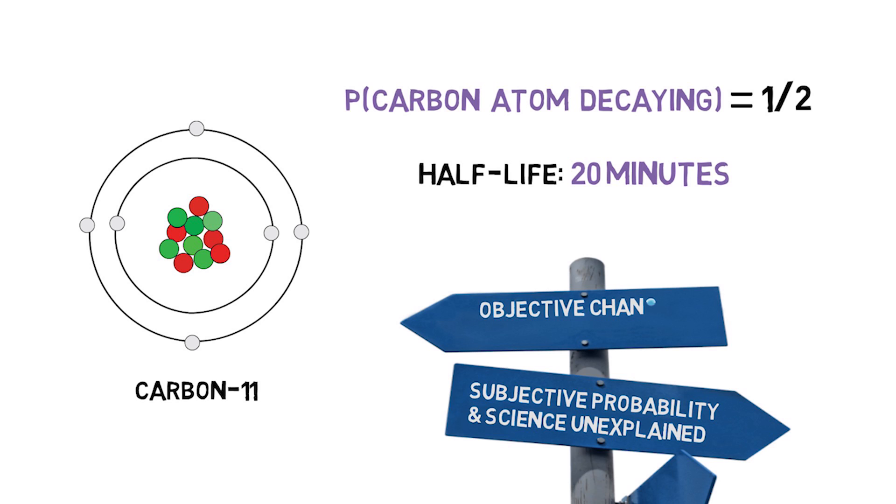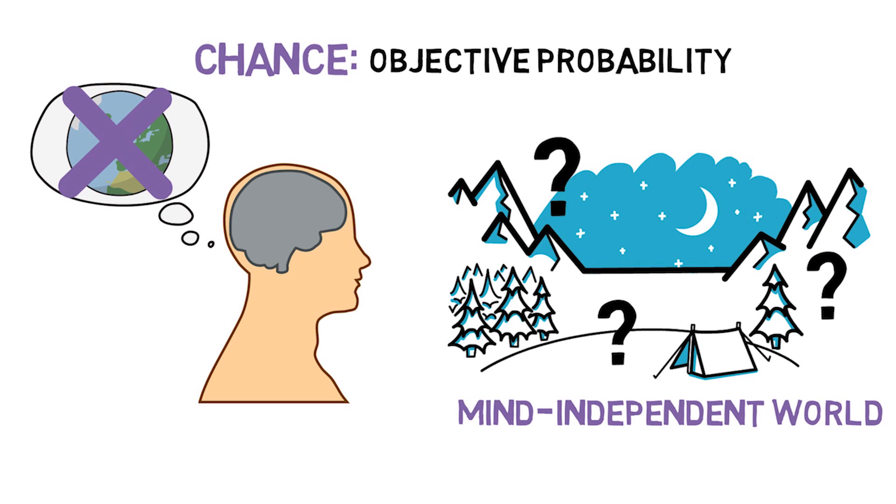No subjective probability, no probability determined by what we believe, or even what we should believe, about the world could explain the behavior of carbon-11 atoms. Chances are objective probabilities. Saying any more about what they are is not easy, but they are also quite hard to do without.